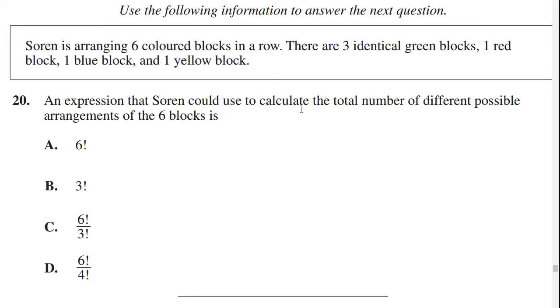Soren is arranging six colored blocks in a row. There are three identical green blocks, one red block, one blue block, and one yellow block. The expression that Soren could use to calculate the total number of different possible arrangements of the six blocks is...